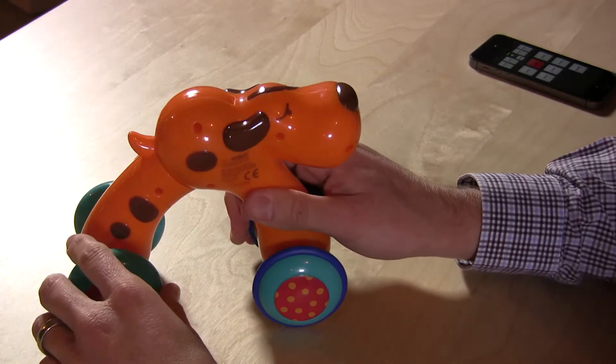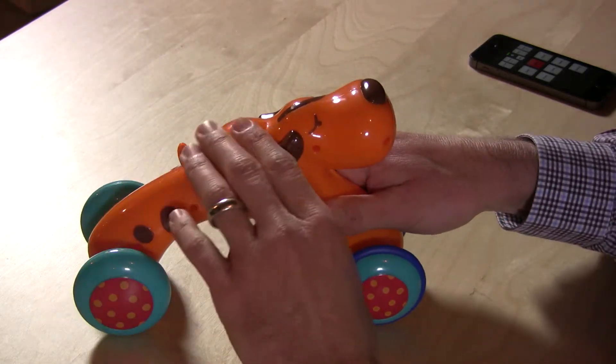Hey everybody, it's Lon Seidman with a Dad Pro Tip. This is the Go Puppy and look at him go. This is kind of a neat little toy for kids 12 months and up. So you want to make sure that you're getting this for the right age child.